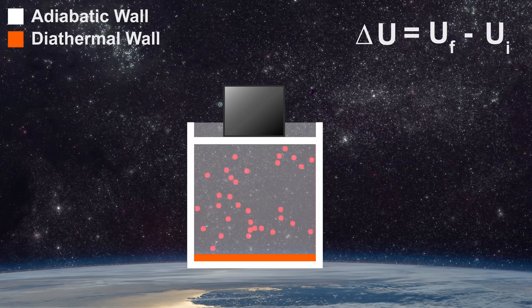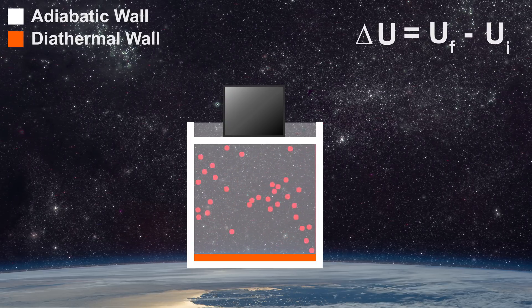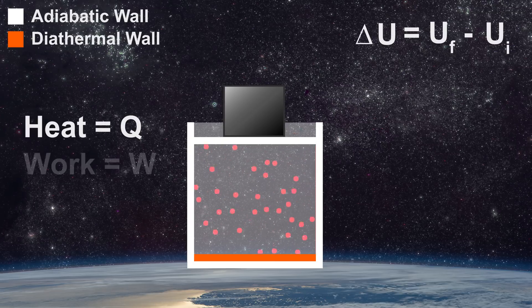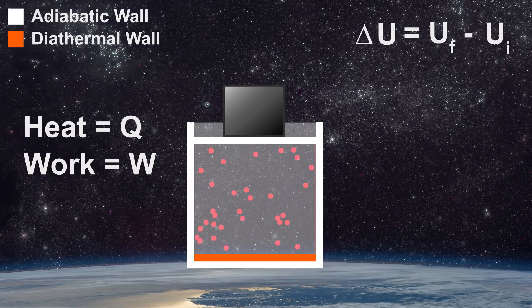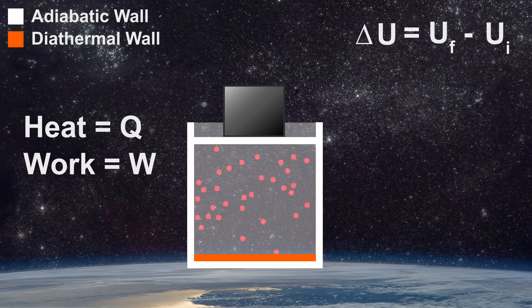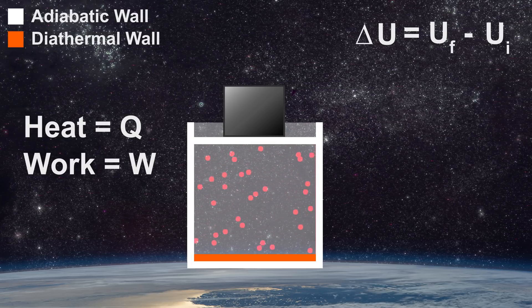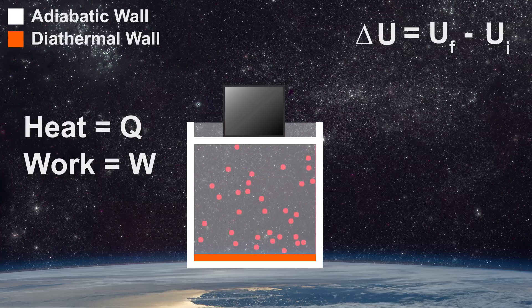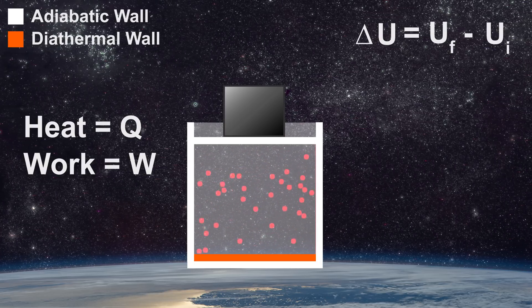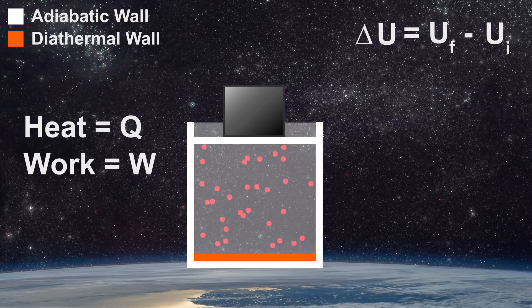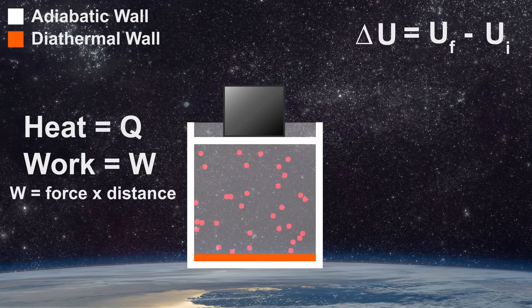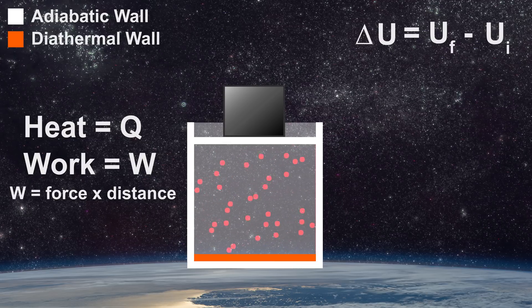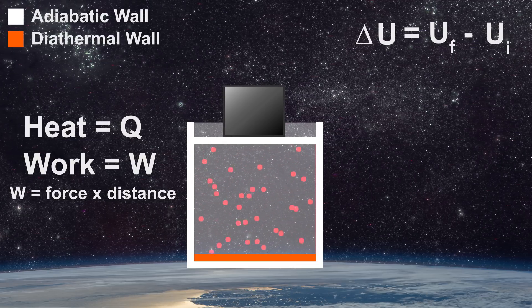Let's put the first law into mathematical form for a closed system. Heat Q and work W are central to change in internal energy. Importantly, heat can be used to do work. When work is performed on a system, the efficiency is measured relative to the energy lost as heat. We will discuss this when we address the second law. Work is defined as force through a distance. Energy can enter or leave our system in the form of work through the movable adiabatic piston wall.